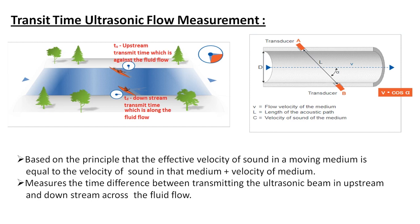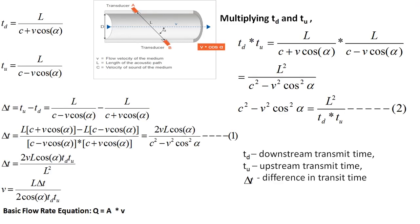The equation can be derived from the typical transit time ultrasonic flow measurement setup, which consists of two transducers A and B emitting ultrasonic waves at an angle alpha into the moving fluid. Here D is the diameter of the pipe, L is the distance between the two elements, and V is the velocity of the fluid. Because the beam is injected at angle alpha, the effective fluid velocity component becomes V cos(alpha).